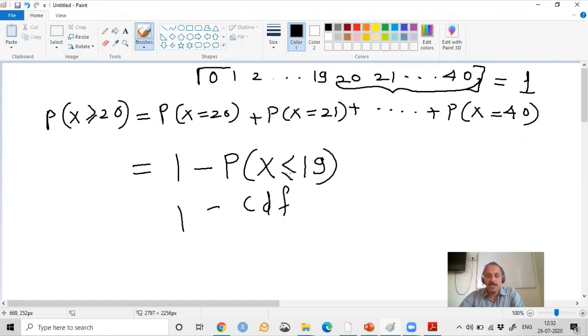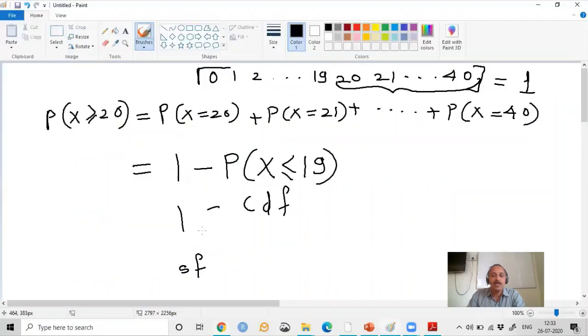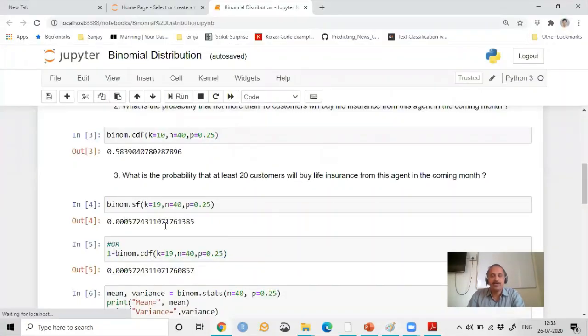However, I recommend that instead of using one minus CDF, you can use the function SF. So you use SF with K equal to 19 and N equal to 40, and you get the answer. Or you can use one minus CDF as I was telling you.